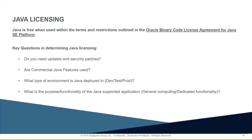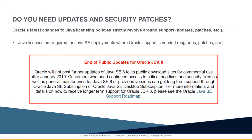Next, we're going to step into what type of environment and what the purpose and functionality of the Java supported applications are. Java licensing is required for Java SE deployments where Oracle support is needed. If you need version updates and security patches, either buy support subscriptions or do a full rip and replace to an open JDK platform, which is free — though probably not the most fun task.